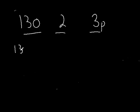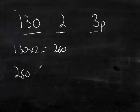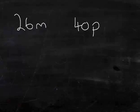130 times 2 is 260. Then 260 times by three pence equals 780. If it's easier, think of this as 26 times 3 first and then add the zero on the end. 780 pence is just £7.80.